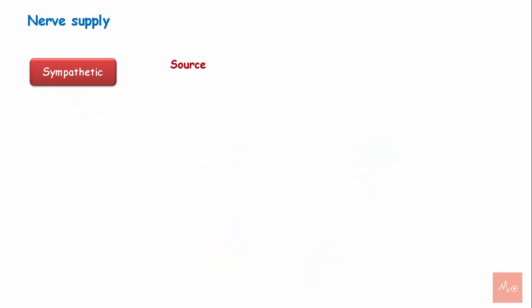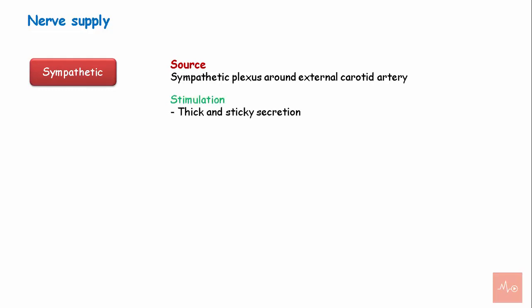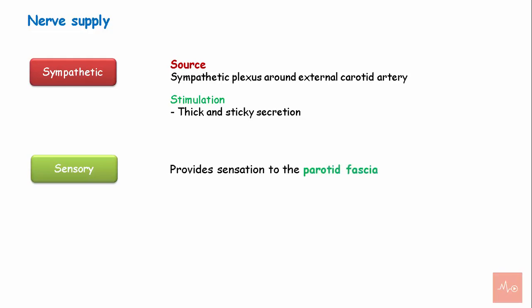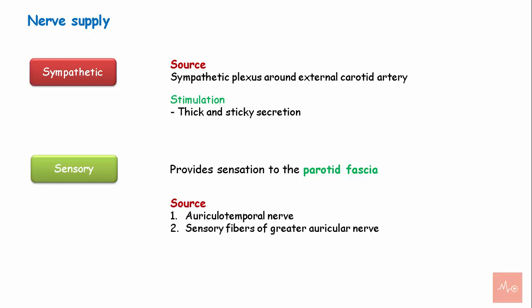The sympathetic nerve supply is derived from the nerve plexus around the external carotid artery. Stimulation of sympathetic nerve fibers causes the release of thick and sticky secretion. The sensory fibers provide sensation to the parotid fascia covering the gland and are derived from the auriculotemporal nerve and sensory fibers of the greater auricular nerve.